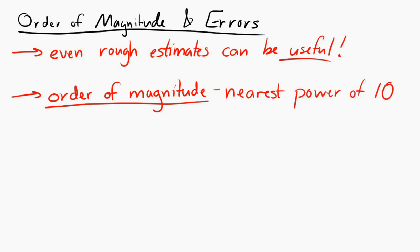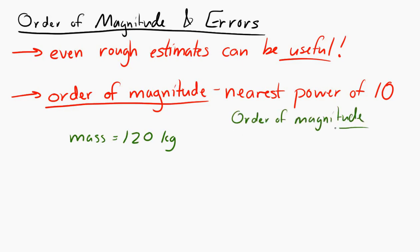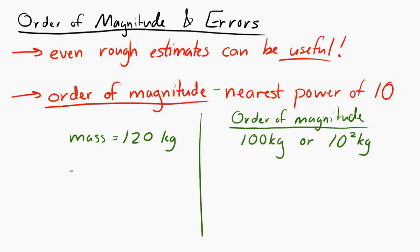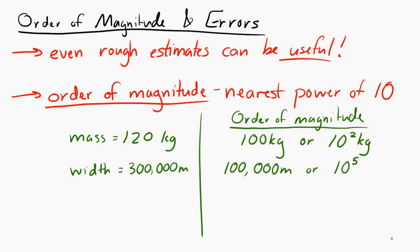So let's say something has a mass of 120 kilograms. The order of magnitude is the nearest power of 10, which is 100 kilograms, or 10 to the 2 kilograms. If something has a width of 300,000 meters, the order of magnitude is the nearest power of 10, which is 100,000 meters, or 10 to the 5th meters.